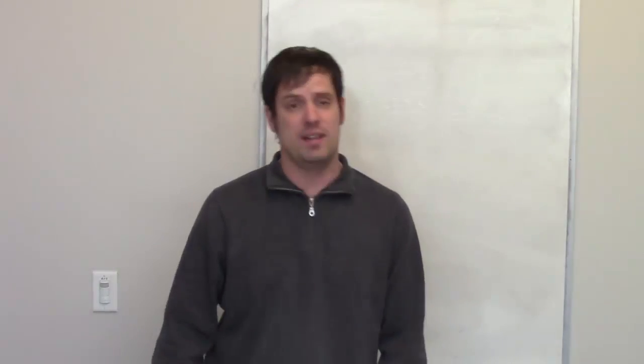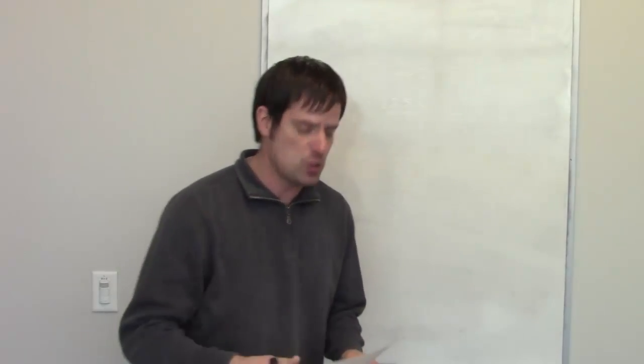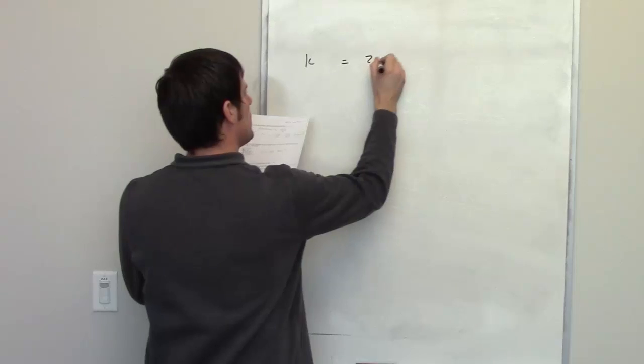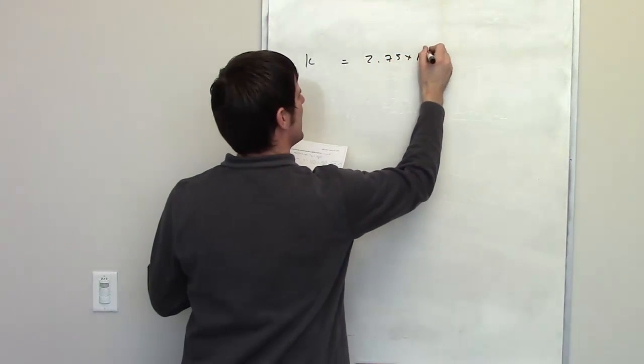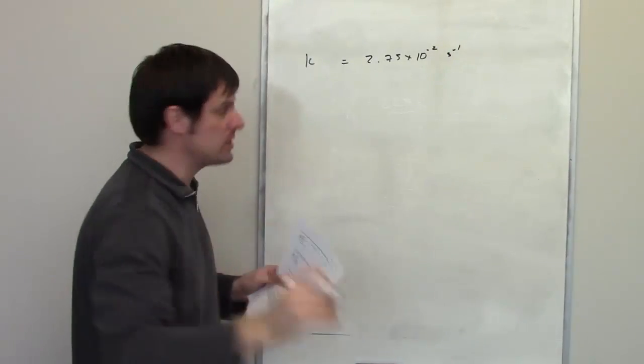This is a really fun problem. It tells us that a certain first-order reaction, and that is actually key, has a rate constant of 2.75 times 10 to the negative 2 inverse seconds at 20 degrees C.